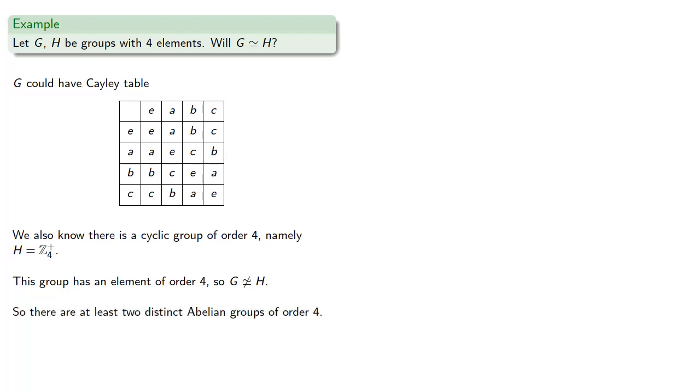And in fact, there are only two ways we can complete a Cayley table on four elements, so there are only two groups of order four.